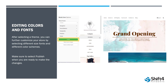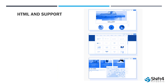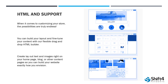Once you've made the appropriate changes and you're happy with everything, you're going to want to hit that Publish button and save those changes to your store. We also offer HTML support. When it comes to customizing your store, the possibilities are truly endless. You can really build your layout and fine tune your content with our flexible drag-and-drop HTML builder. You can create layout text and images right on your homepage, your blog, or other content pages, so you can build your website exactly how you envision it.